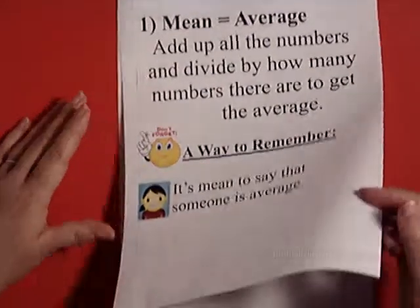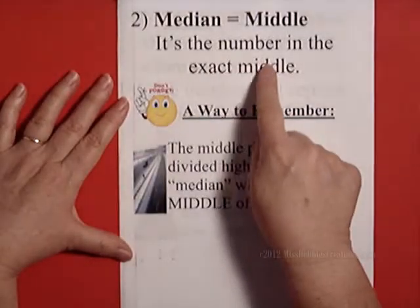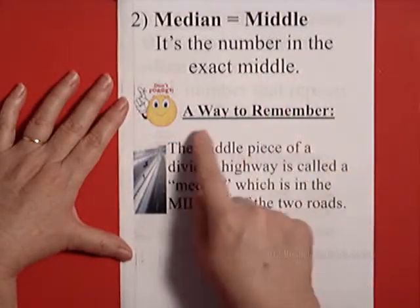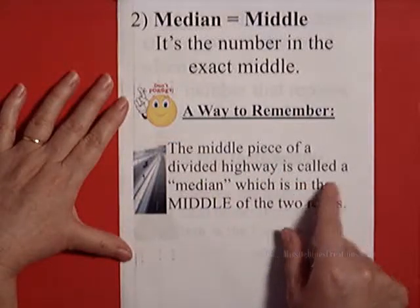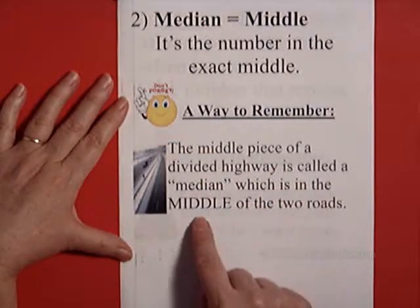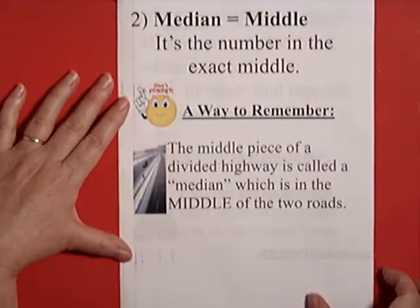Let's go on to the next one. You have median, which means middle. It's the number in the exact middle. A way to remember is the middle piece of a divided highway is called a median, which is the middle of the two roads. So median equals middle.